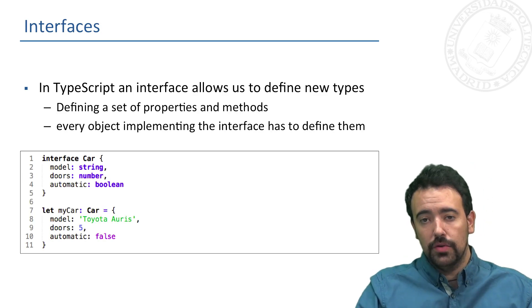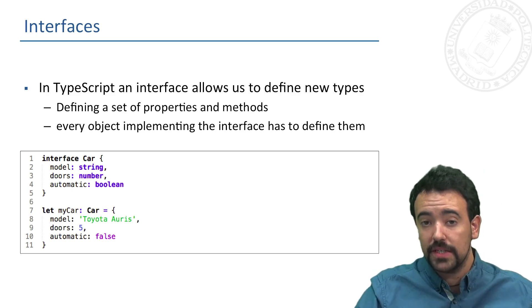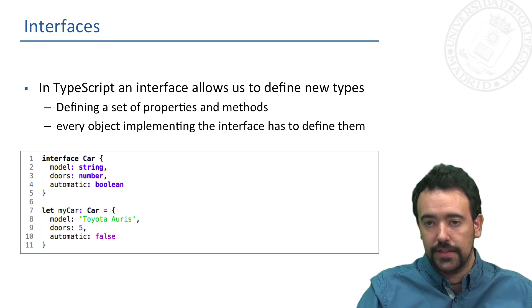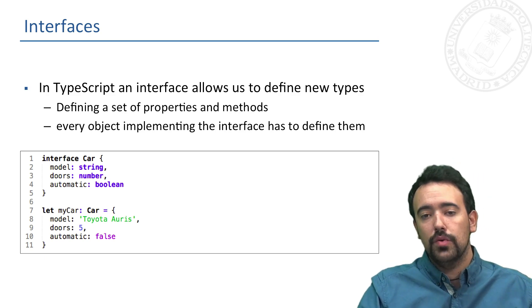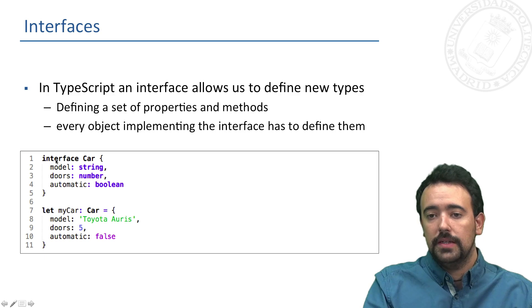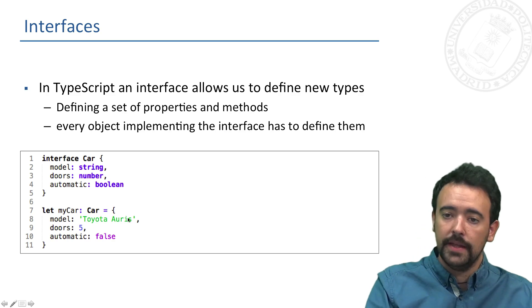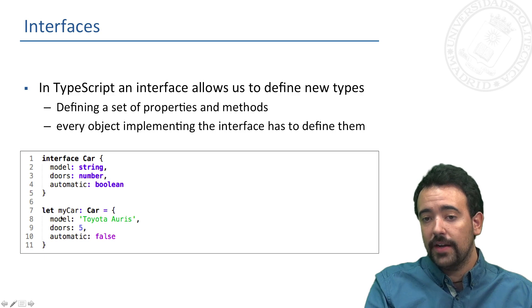Finally, a very useful tool that TypeScript provides is a way of creating a new type of objects in our TypeScript code, and these are a kind of interfaces that allow us to define new objects with a set of properties and methods. For instance, in this example you can see how I have defined a new interface called 'car' in which I have defined a set of properties: the model that is a string, the number of doors that is a number, and then a boolean that specifies if the car is automatic or not.